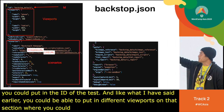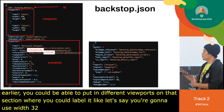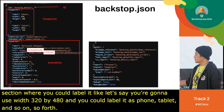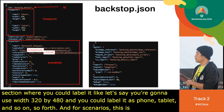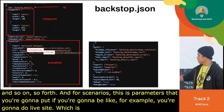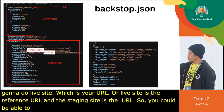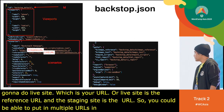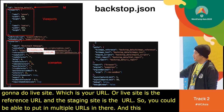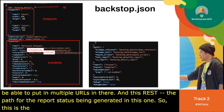In backstop.json, you define viewports with labels — for example, width 320 by 480 labeled as 'phone', plus tablet, desktop, and so on. The scenarios section is where you put your reference URL (your live site) and the test URL (your staging site), and you can include multiple URLs. You also configure the paths where reports are generated, which your CI will check for test results.